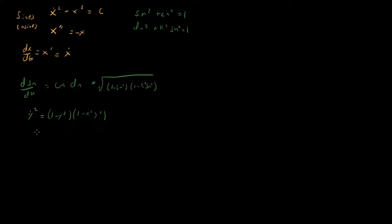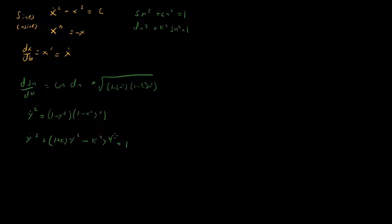We can expand this out to get more intuition. What we get is: y-dot² + (1 + k²)y² − k² y⁴ = 1. This is like the harmonic oscillator energy equation, except we have this quartic term — y-dot² plus something·y² is the harmonic oscillator part, but then we have this minus y⁴ term which is nonlinear and generalizes the harmonic oscillator.